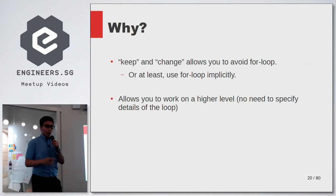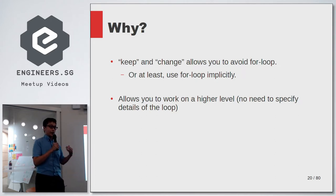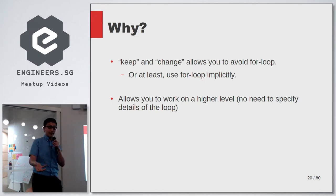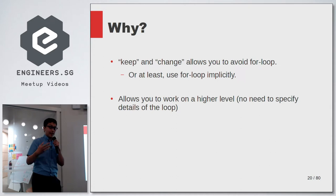Why do we want to define these keep and change functions? It's because it allows you to avoid using a for loop — or at least use it implicitly. You just tell the computer what you want to do with the list: do you want to change it, keep some elements, or remove some? Usually when you have a list, you either change individual elements or keep/remove some elements. You work at a much higher level and let the computer handle the details in the background.